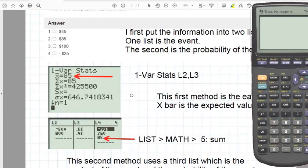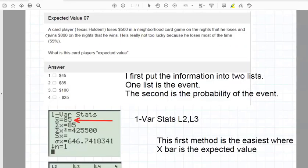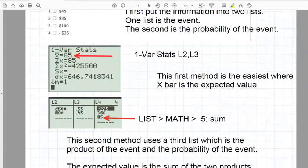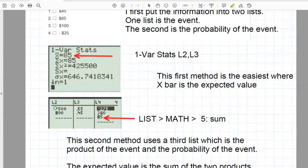The first thing we do is to put in the events, and the two events are the event of losing $500 and the event of winning $800. A loss would be a negative, and a win would be a positive. So using that idea, the loss,